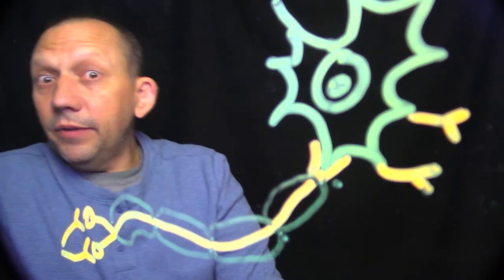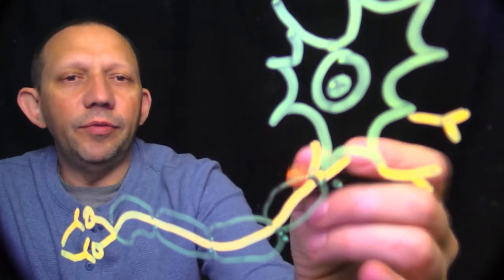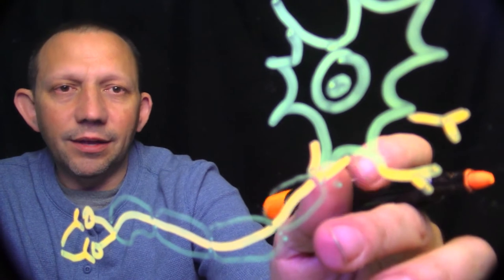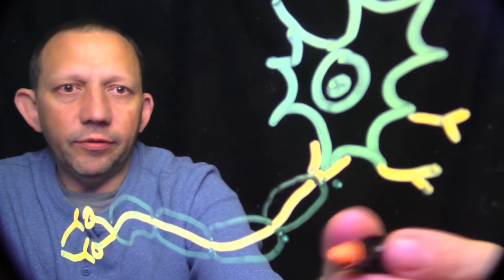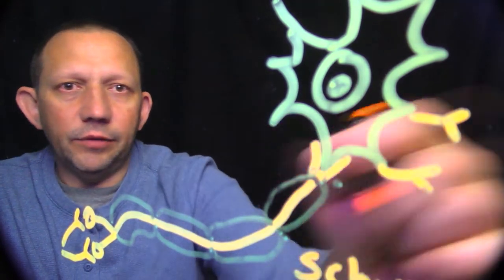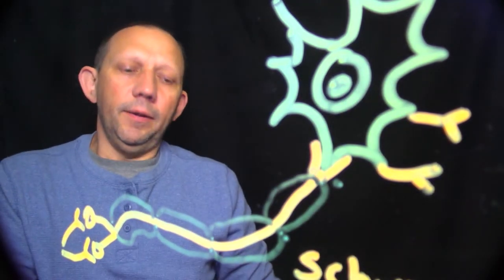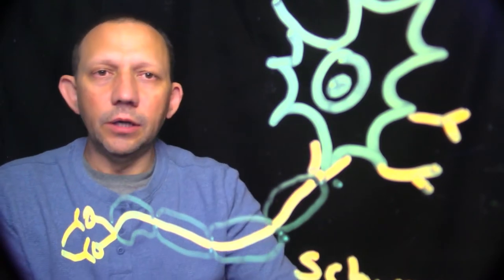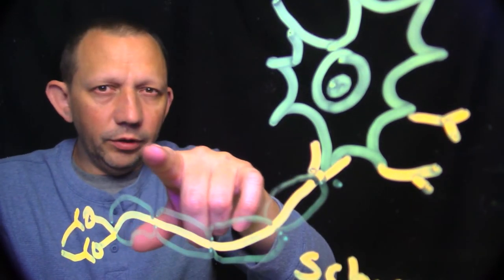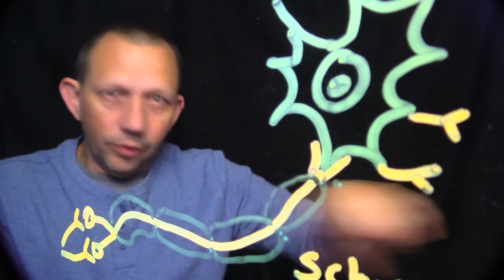This myelin sheath is made by a thing called a Schwann cell—yes, S-C-H-W-A-N-N. I'll type it up here because you can't see it. Schwann cells are the same as oligodendrocytes, which we'll get into a little bit. Just remember oligodendrocytes and Schwann cells—same guy, it's myelin covering just in different areas.